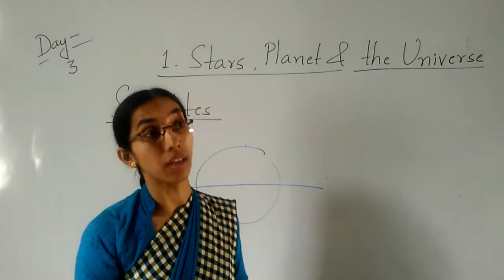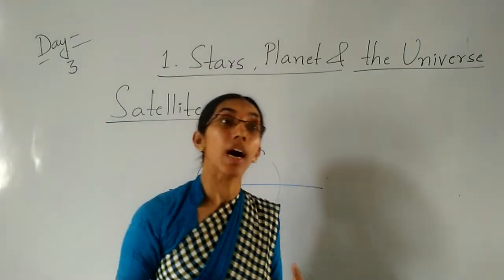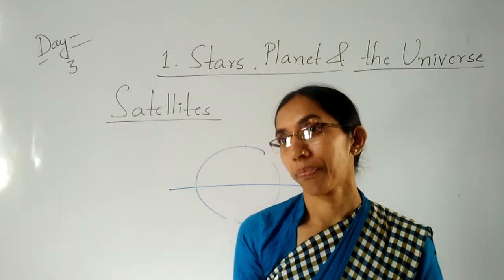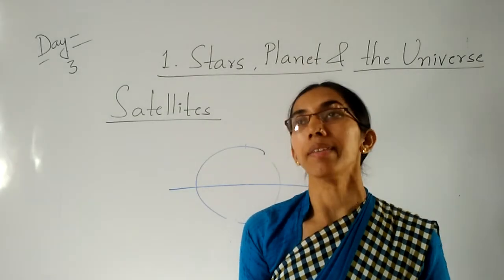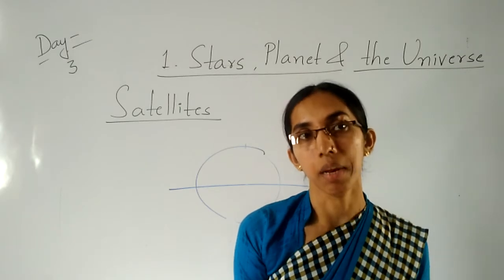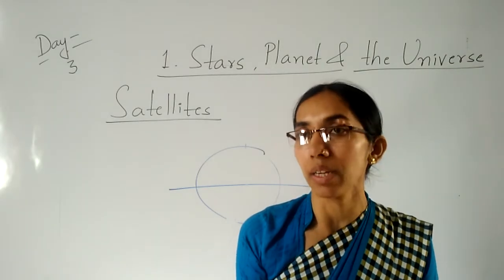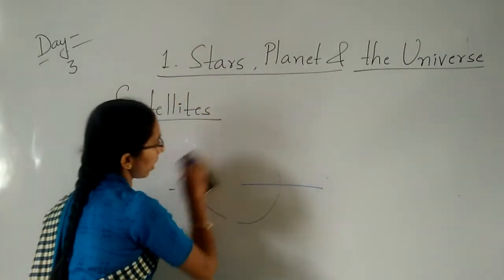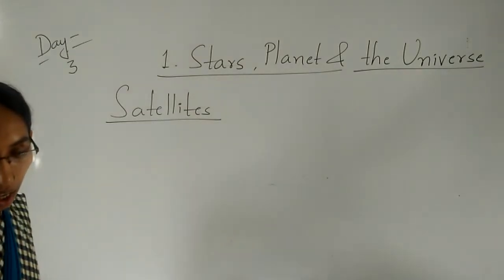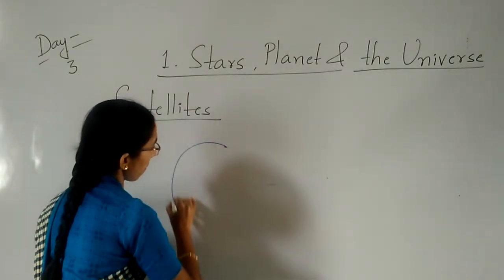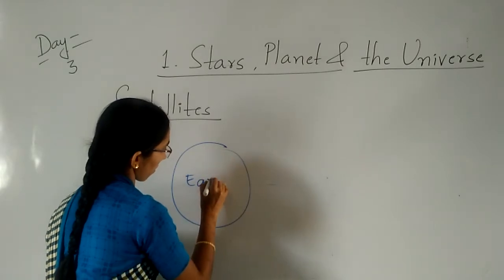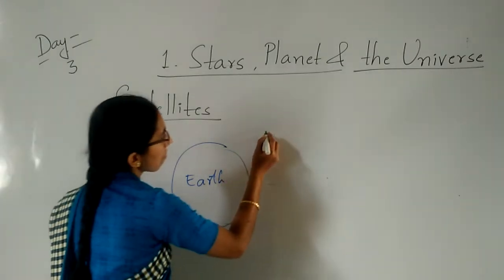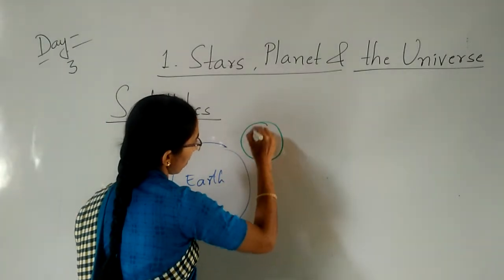In today's class, you are going to learn about satellites. Which is the natural satellite of the earth? The Moon is the natural satellite of the earth. Here you can see — this is our earth, and this is the moon. Moon is very small.